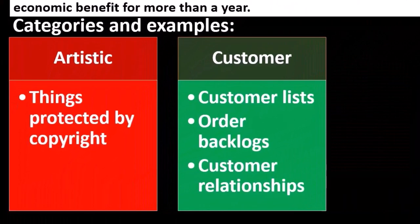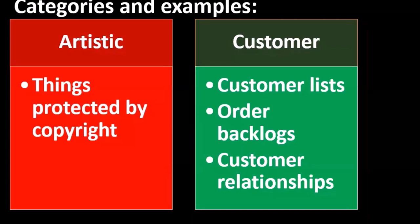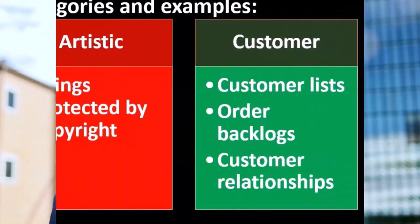Customer-related items such as customer lists, order backlogs, and customer relations are types of assets that are not tangible. They're not things we would typically think of when listing assets and liabilities, but they clearly have value. Customer lists, order backlogs, and customer relationships are clearly valuable assets.